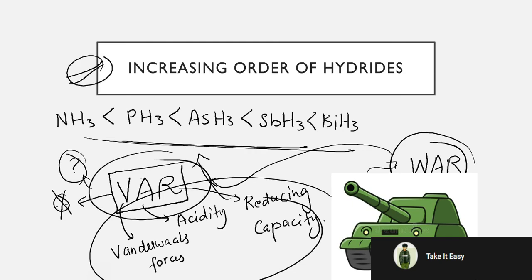All of these characteristics increase down the group. So you have to remember this VAR and the bottle head. In VAR there is an increase down the group, and in bottle head there is a decrease. We have discussed two very important mnemonics: VAR and bottle head.